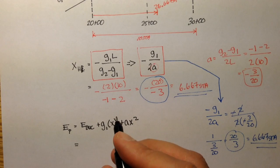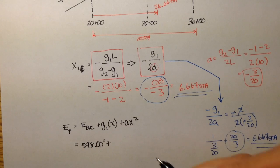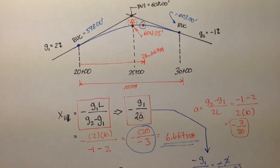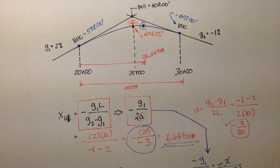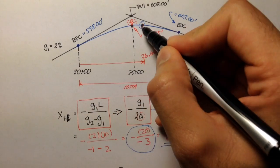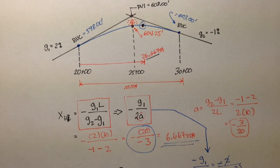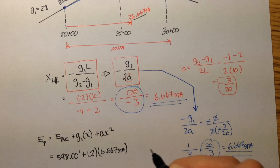So we already know what E_BVC is. It's 598.00 plus grade 1, which is 2, times x. We are interested in this point, the highest point on this curve. We want to figure out what that elevation is. In order to do so, we need x. x is any distance from BVC. Since this is the point we're interested in, and that's located at 6.667 stations from BVC, our x in this case would be this 20 over 3, or 6.667 stations.